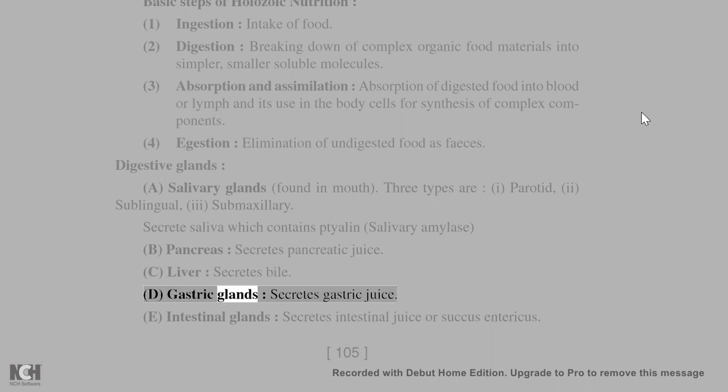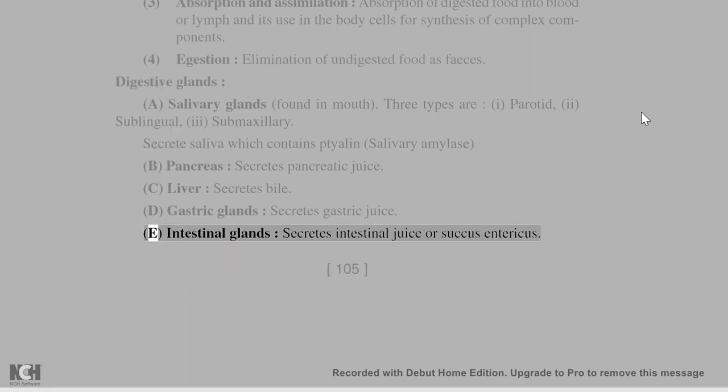D. Gastric glands — secrete gastric juice and gastric acid. E. Intestinal glands — secrete intestinal juice or succus entericus.